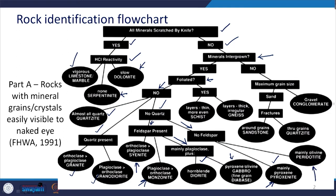If minerals are intergrown and foliated, then we have to follow this branch. If foliations are present, whether those layers are thin or more even, then it is schist. If those layers are thick and irregular, it is gneiss.